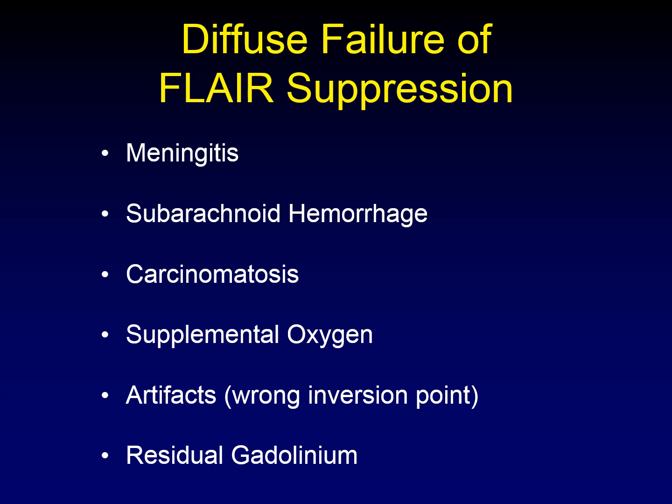One thing that can cause a diffuse failure of FLAIR suppression is diffuse meningitis. A small amount of inflammatory proteins leaching into the CSF from the adjacent inflamed meninges is enough to cause the inversion pulse to fail. If you have a focal meningitis, you will get this focally; if you have a diffuse meningitis, you can get it diffusely.